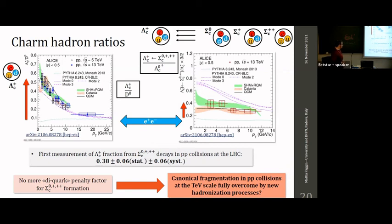Regarding the Sigma_c plus with pi zero: with this technique we can reconstruct Sigma_c zero and plus-plus by charge conservation. The Sigma_c plus is more difficult in ALICE because it requires reconstructing photons from the pi zero using calorimeters, which have limited acceptance in our apparatus, making everything more difficult. But in principle the possibility exists, and it could be tried — especially with new data where more statistics will be available.